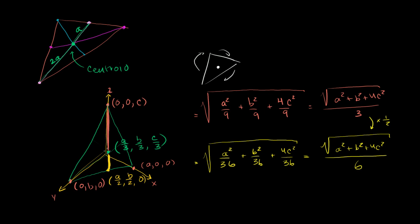So this is always going to be twice the distance as this, because we did this in the most general possible way — we assumed nothing about this triangle. Remember that property: the centroid, the intersection of the medians, occurs 2/3 along every median from the vertex, or 1/3 of the median's length away from the midpoint of the opposite side. We can use that property in many problems. Hopefully you found that interesting.